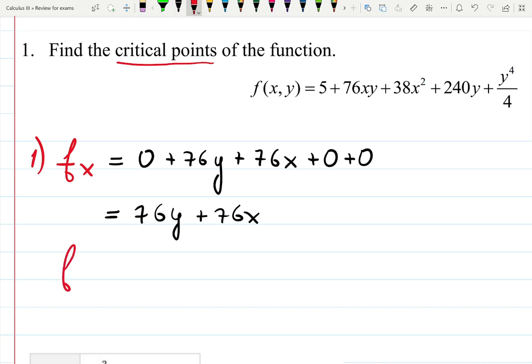Partial derivative with respect to y. Now your brain should switch and see x as a constant and y as a variable. Still 5 gives you 0.